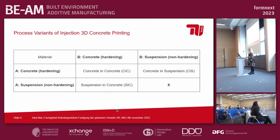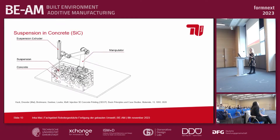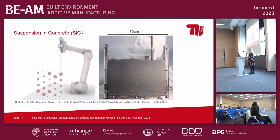As you see this matrix, there are in total three feasible subcategories of injection 3D concrete printing which are relevant for construction: namely concrete and concrete, suspension and concrete, and concrete and suspension. As I am aware that there are a lot of architects here, I would like to start with some applications. Starting with suspension and concrete: you fill your concrete in a vessel and then inject the non-hardening suspension into the vessel at specific locations. After hardening of the concrete, the non-hardening suspension can be removed, leaving cavities or channels behind. This can be used, for example, to grade concrete components by differentiating its density at specific locations.